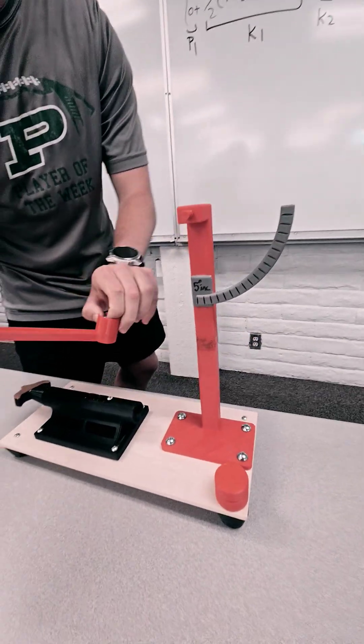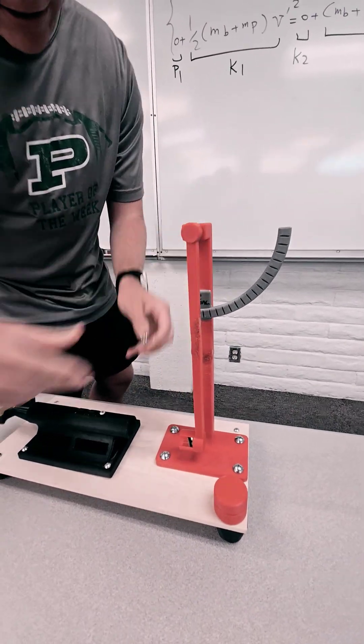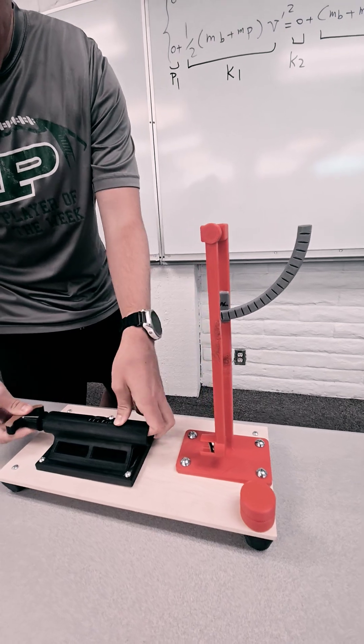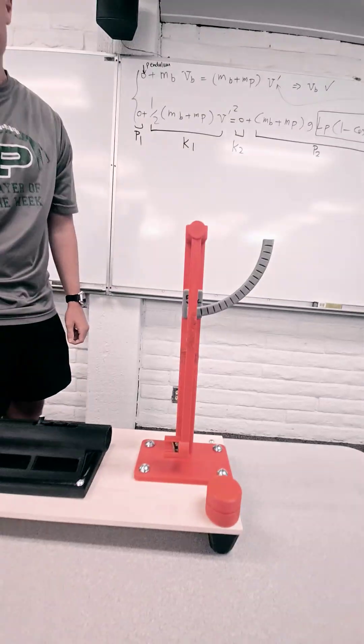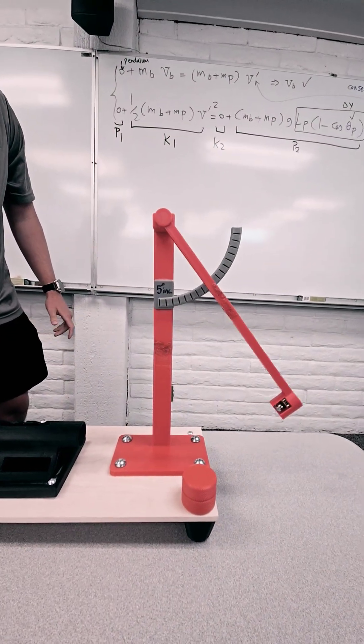Yeah. So you just take this off to reset it, take the ball out, get this lined up nice and straight. Okay. Now here we go for the second notch and it should go further up. There we go.